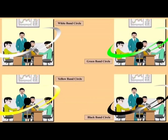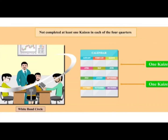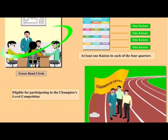Now let's look at the bands of SGA circles: white band, green band, yellow band, and black band. White band circles are those SGA circles that have not been able to complete at least one Kaizen in each of the four quarters. Green band circles are those SGA circles that complete a minimum of one Kaizen every quarter. Only these circles become eligible for participating in the champions level competition held at the end of every financial year.